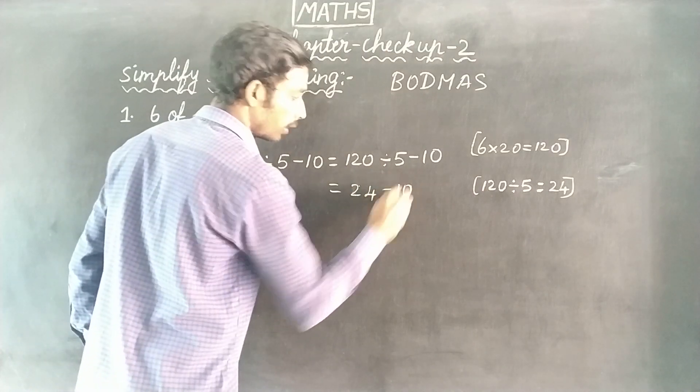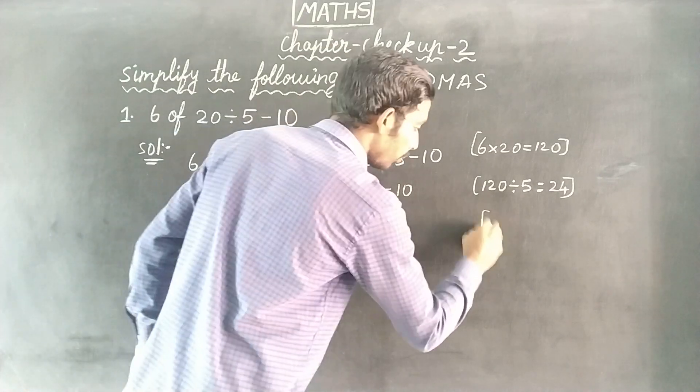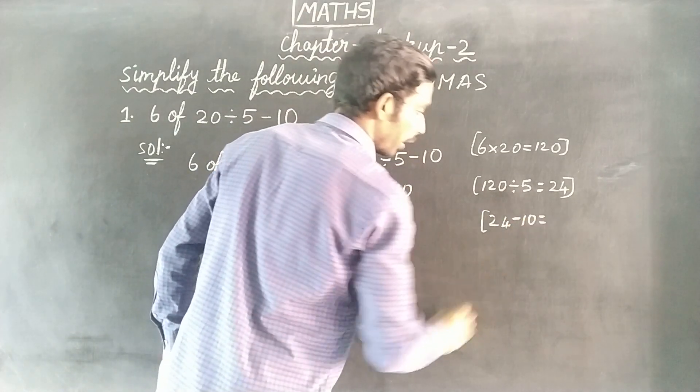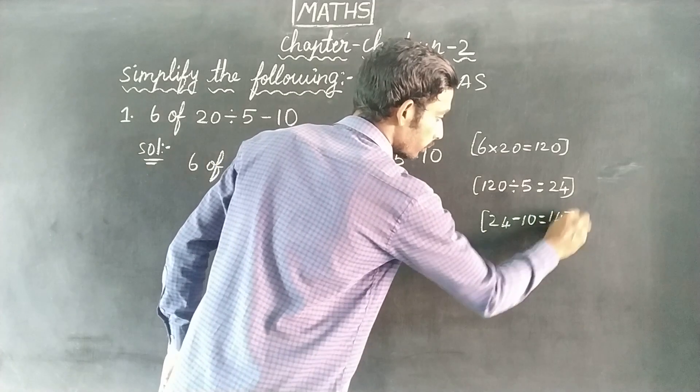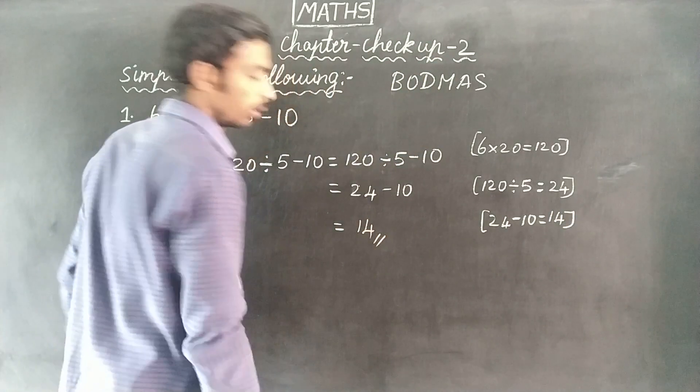So 120 divided by 5 equals 24. So minus 10 and 14. So answer is 14.